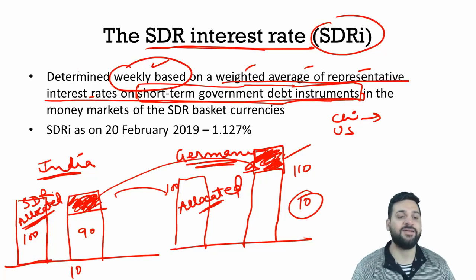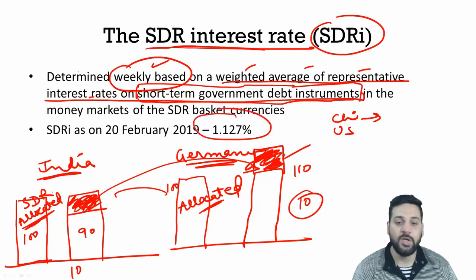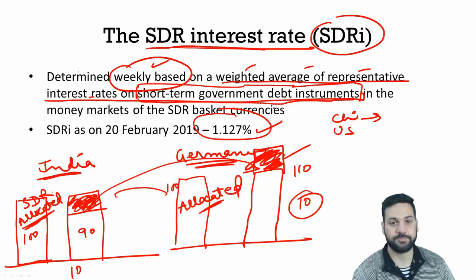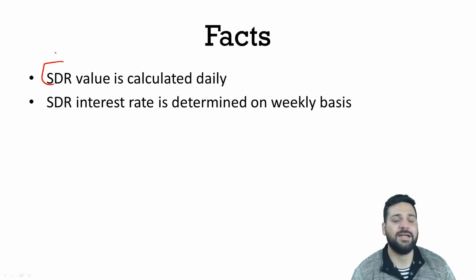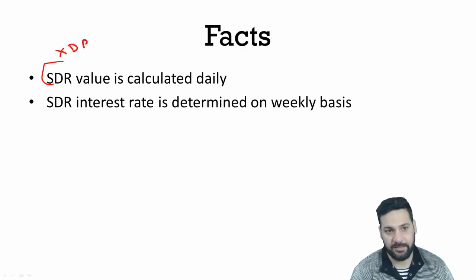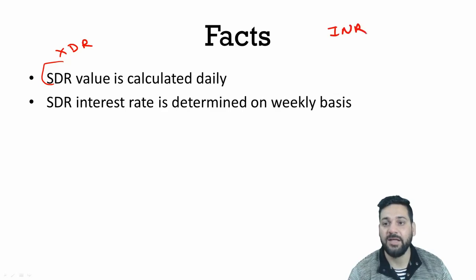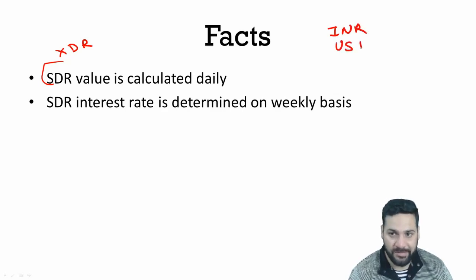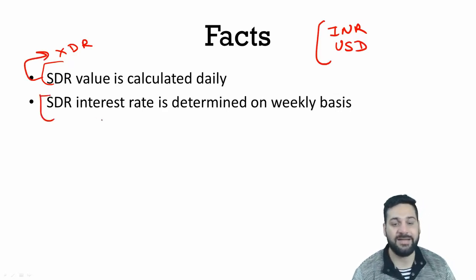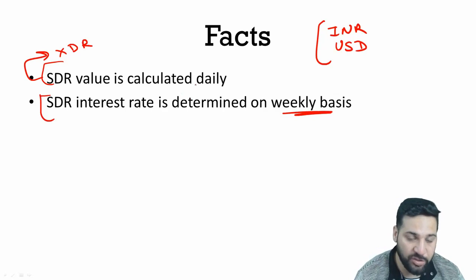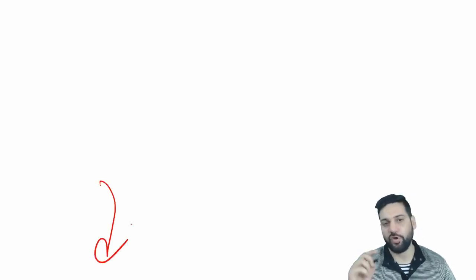The today's SDRi is 1.127 percent. The SDR's currency code is XDR — just as India's currency code is INR and the US dollar's is USD. The SDR value is calculated on a daily basis, while the SDR interest rate is determined on a weekly basis. That's all for today — please post any doubts in the comments section. Thank you, and have a nice day.